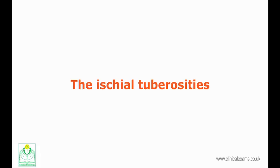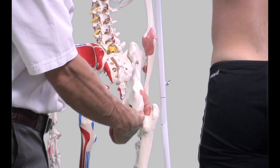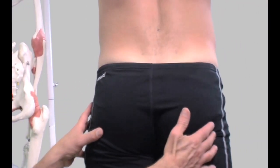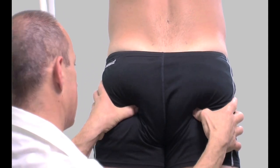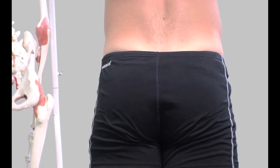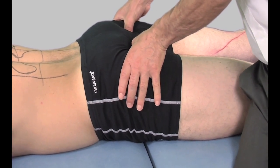The ischial tuberosities are two large bony protrusions on the inferiormost margin of the ischium. They are located deep within the gluteal muscles and are commonly referred to as the sitting bones. They can be palpated when the patient is prone so that the gluteal muscles are more relaxed. You can feel them if the patient sits bolt upright at the edge of the couch with your outstretched palms placed underneath. They mark the lateral boundary of the pelvic outlet.